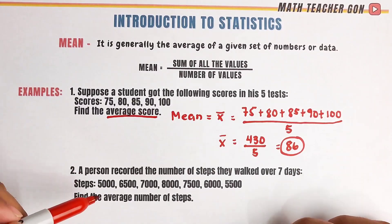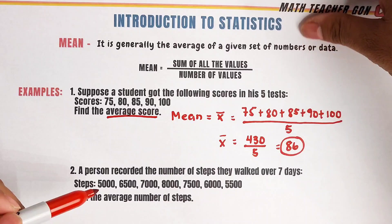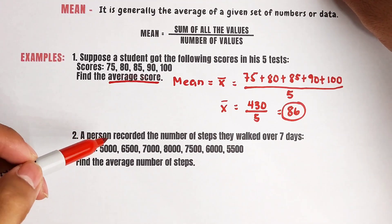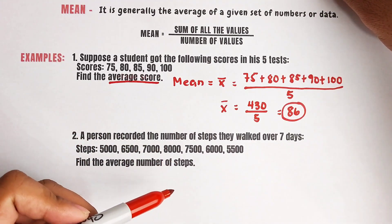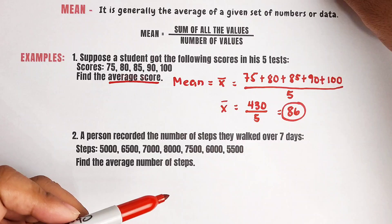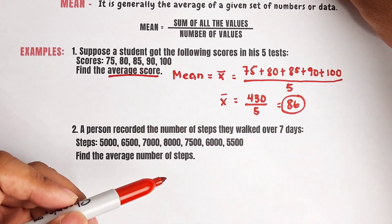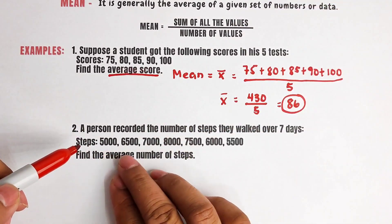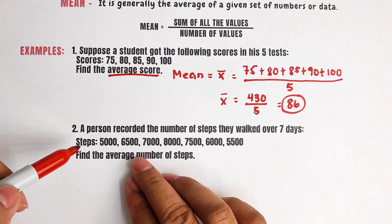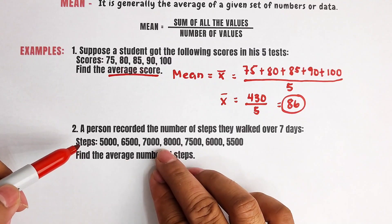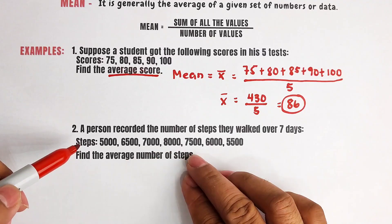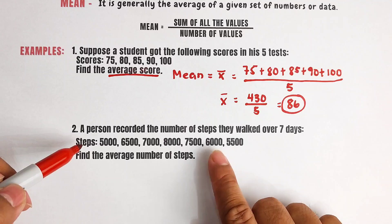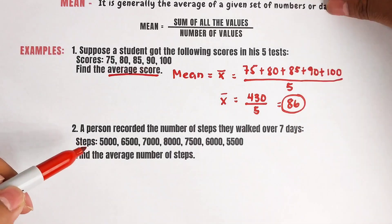Now let's move on with item number 2. A person recorded the number of steps they walked over seven days. The steps are: 5,000; 6,500; 7,000; 8,000; 7,500; 6,000; and 5,500.